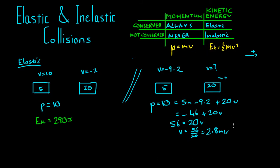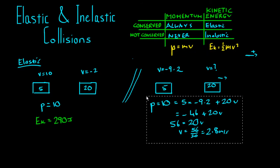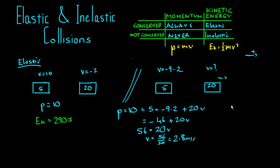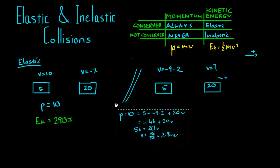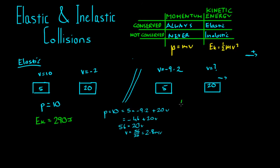I'll just make this a little smaller. Move it over. OK. So the kinetic energy total is the kinetic energy of this block plus that of this block. We'll put in V equals 2.8 metres per second. So that's 1/2, 5, negative 9.2 squared, plus 1/2, 20, 2.8 squared,